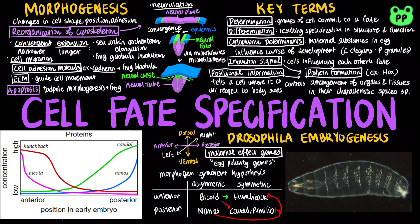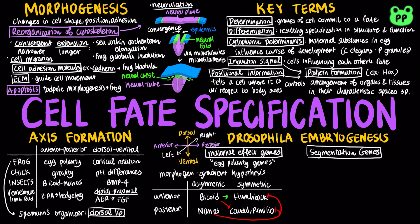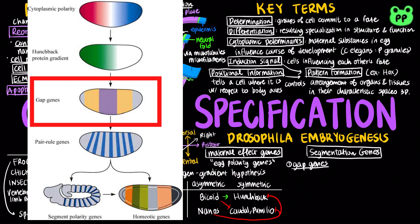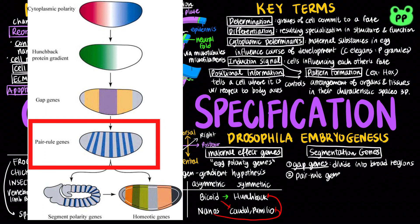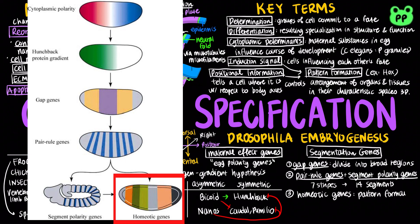Drosophila embryogenesis is also regulated by the segmentation genes, which direct the formation of the proper number of body segments. First, the gap genes divide the developing embryo into several broad regions. The pair-rule genes then define 7 stripes, and the segment polarity genes divide them into 14 segments. Finally, homeotic genes function in pattern formation, specifying which organs and appendages will develop in particular segments.